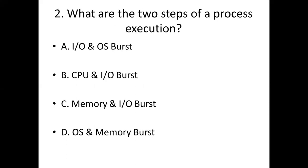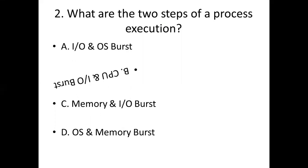Second bit. What are the two steps of a process execution? Option A: IO and OS burst. Option B: CPU and IO burst. Option C: Memory and IO burst. Option D: OS and Memory burst. Answer: Option B, CPU and IO burst.